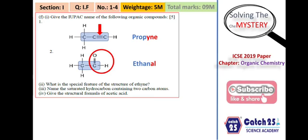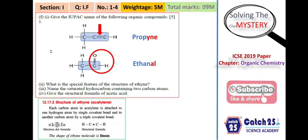The next question asks: what is the special feature of the structure of ethyne? Ethyne, also known as acetylene, is a linear molecule. It contains a carbon-carbon triple bond, and the carbon atoms are SP-hybridized, giving it a linear molecular structure. All bonds in ethyne are covalent bonds, not ionic bonds.